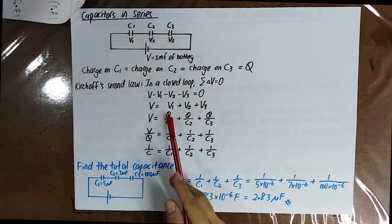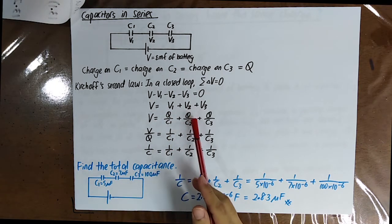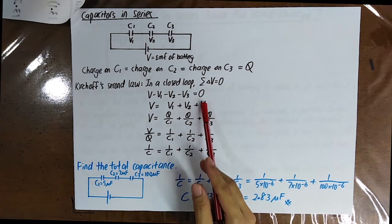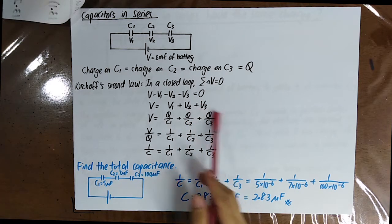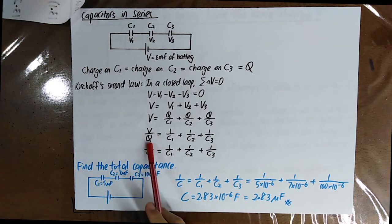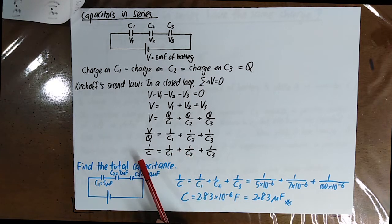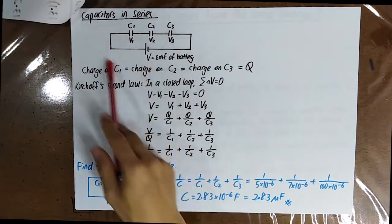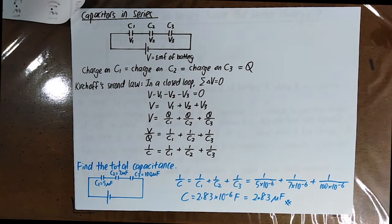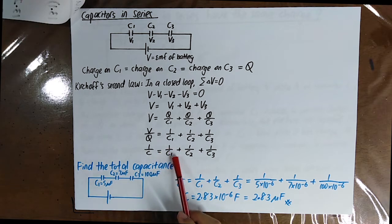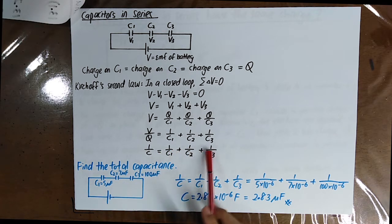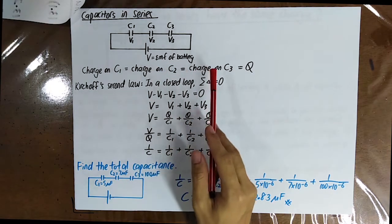V1 is equal to Q over C1, V2 is equal to Q over C2, and V3 is equal to Q over C3. Then V divided by Q is equal to 1 over C, where C is the total capacitance, or the equivalent capacitance of the whole circuit. So 1 over C is equal to 1 over C1 plus 1 over C2 plus 1 over C3 for capacitors in series.